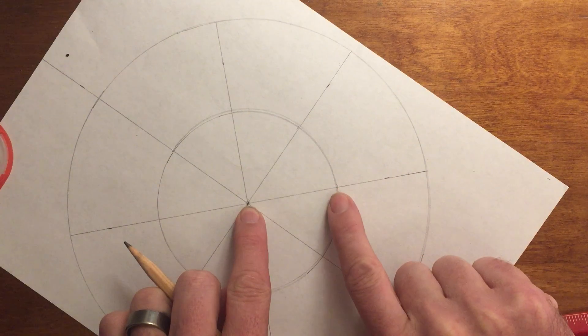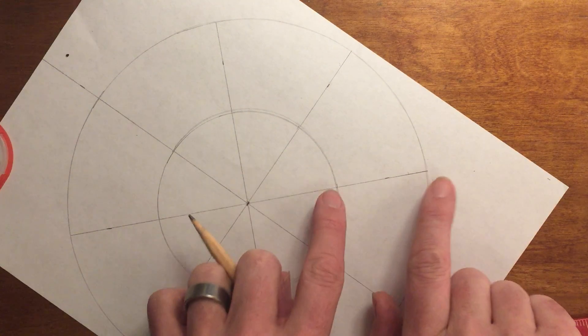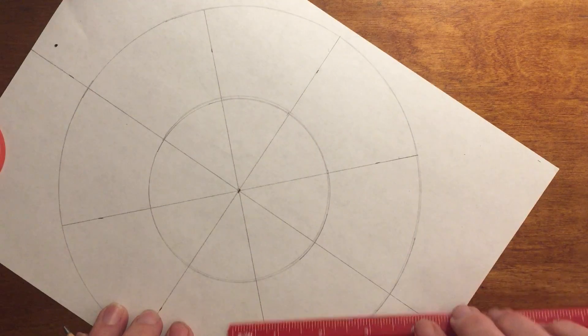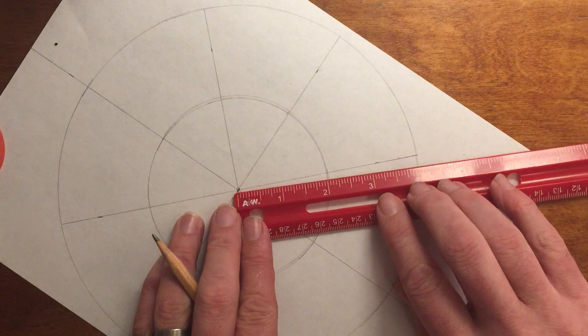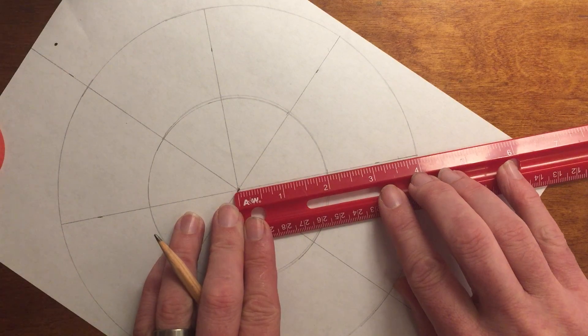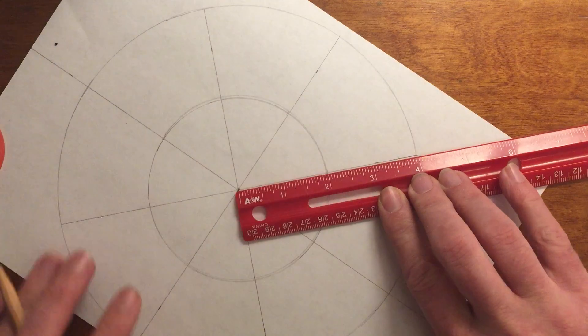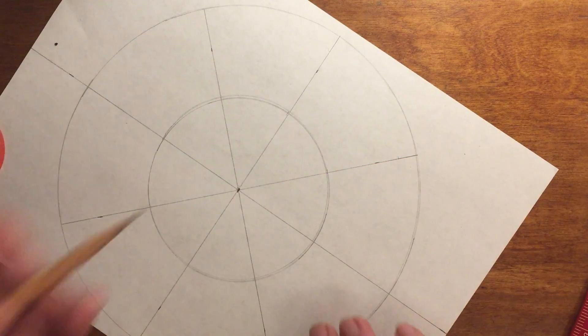There should be two inches from here to here and two inches from here to here. The size of these kind of messes with the look of it, but if I lined up my ruler here, you're going to see there's my zero, there's two inches, and four inches.